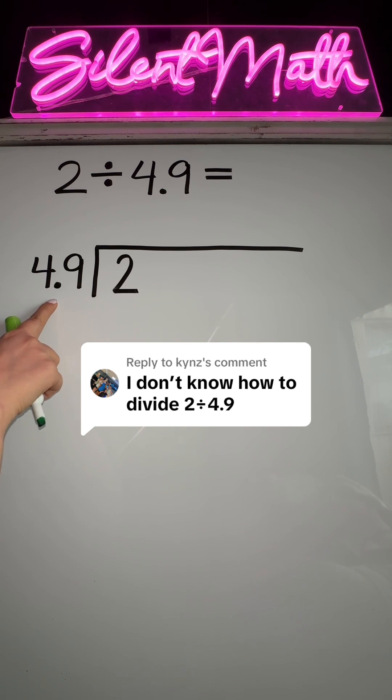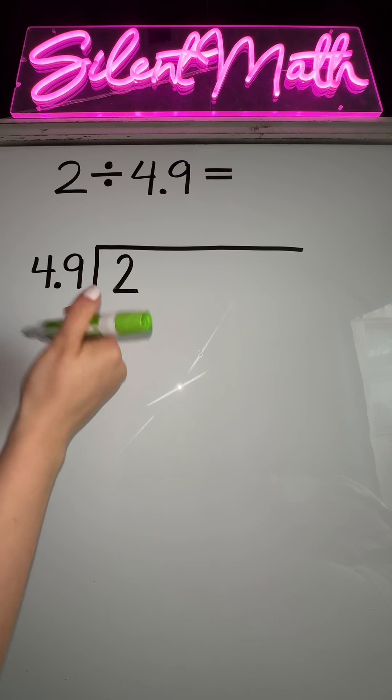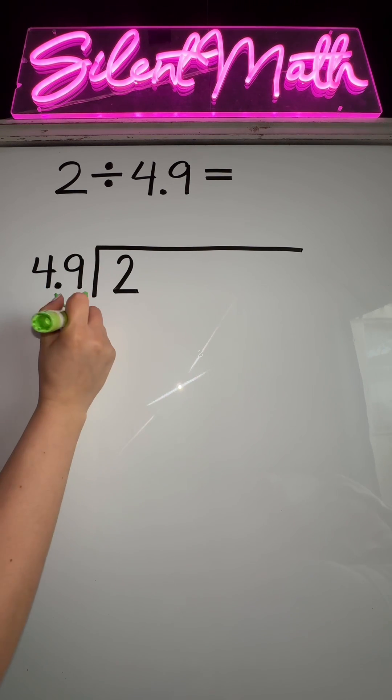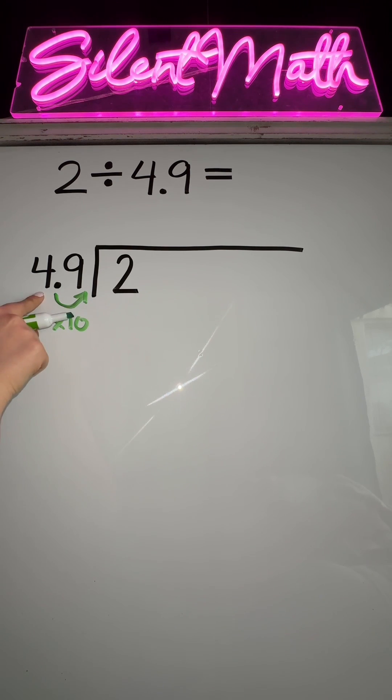This is a decimal, 4.9. If you want to make it 49, you're going to move the decimal once to the right, or technically you are multiplying by 10. And since we're changing this number, you have to change this number as well.